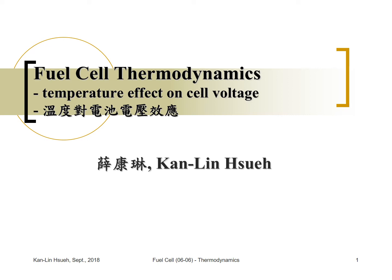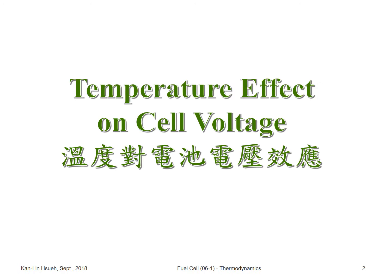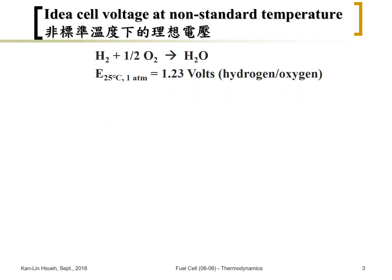Hi, this is Ken Nisha speaking. In this section we're going to talk about the temperature effect on cell voltage. In the previous section we mentioned that cell voltage can be calculated from thermodynamic properties such as free energy. Now we're going to talk about temperatures other than the standard condition of 25 degrees Celsius, using a hydrogen-oxygen fuel cell as an example. At standard conditions — 25 degrees, one atmosphere pressure — the cell voltage is 1.23 volts.